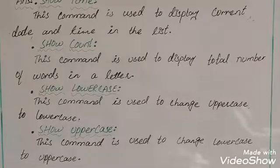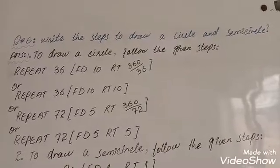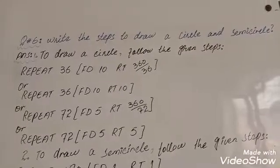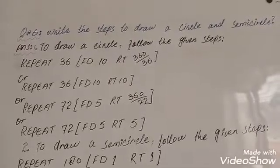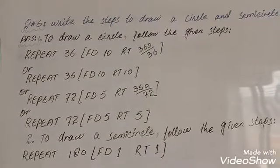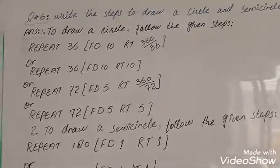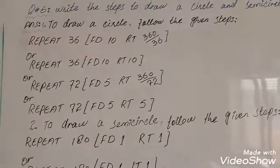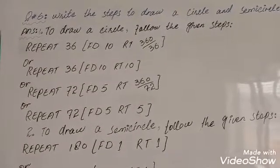Question 6: Write the steps to draw a circle and semicircle. Answer: To draw a circle, follow the given steps. REPEAT 36, length 10, right angle 360 divided by 36. REPEAT 36 FD 10 RT 10. FD means length. Or, REPEAT 72, length 5, angle 360 divided by 72 equals 5.